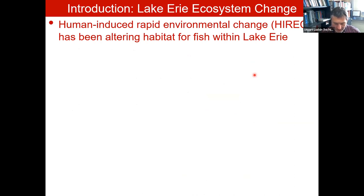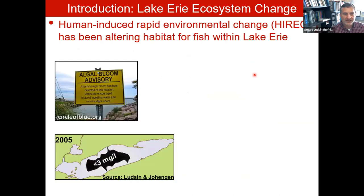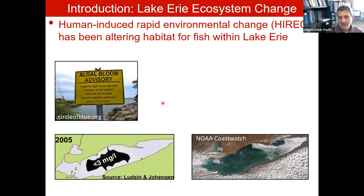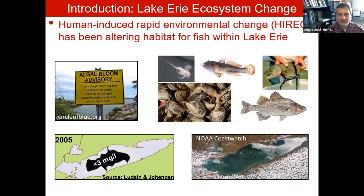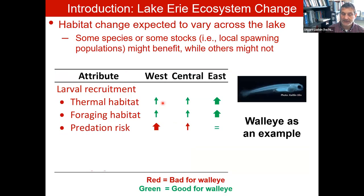To begin, I want to talk about something I call human-induced rapid environmental change, or HIERIC. Lake Erie, like most large aquatic and terrestrial ecosystems, has been experiencing ecosystem change at the expense of human activities in the watershed. In Lake Erie, we've had nutrient pollution leading to harmful algal bloom formations, hypoxic zones or areas of low oxygen in central Lake Erie, climate warming leading to reduced ice cover, and a whole host of invasive species that have the potential to alter habitat availability to fish populations.